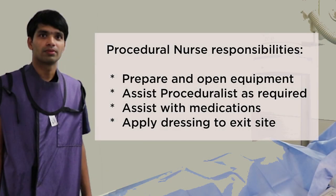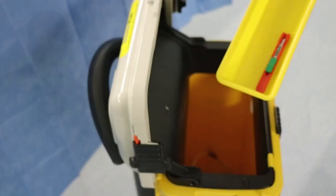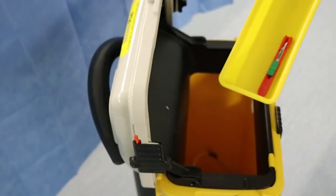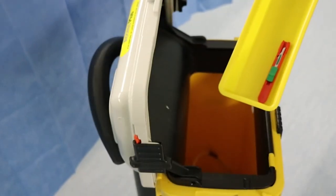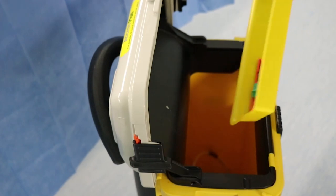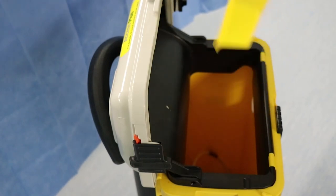Once the medical officer is happy with the positioning of the leads and settings, the procedural nurse will apply a clear occlusive dressing to the exit site. The team is responsible for discarding all waste including the safe disposal of sharps.